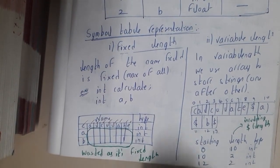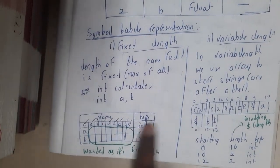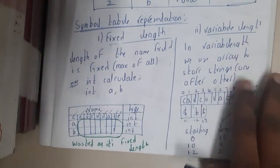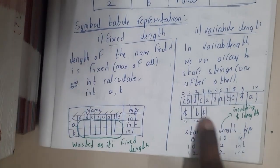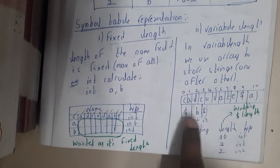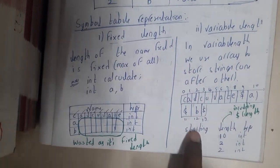Whereas variable length means you store the whole names in a single array like calculate$a$b$. For this, you create a separate table in which you store the starting position, length, and type. The length includes the dollar sign.